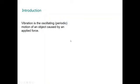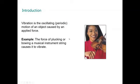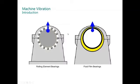Vibration is the oscillating motion of an object caused by an applied force. For example, the force of plucking or bowing a musical instrument string causes it to vibrate, like the violin.